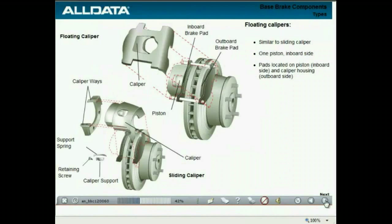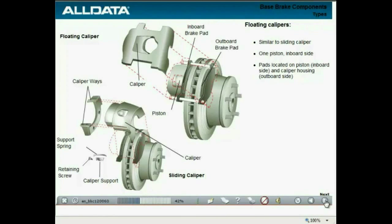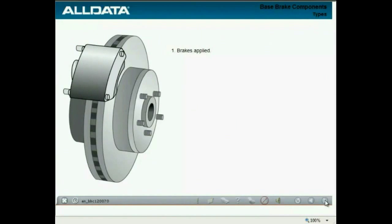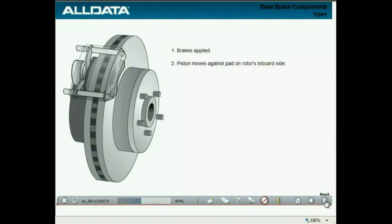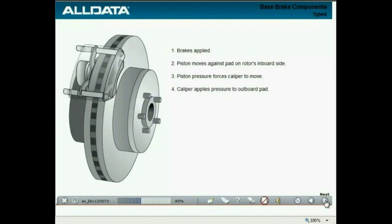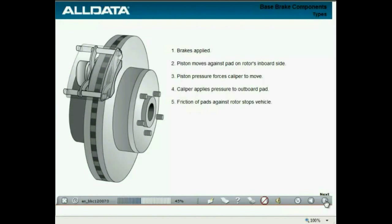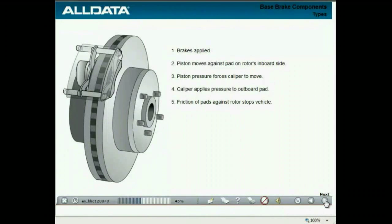Floating calipers and sliding calipers are very similar. Both generally use one piston located on the inboard side of the caliper. The brake pads are attached to the piston on the inboard side and the caliper housing on the outboard side. When the brakes are applied, hydraulic pressure forces the piston to move out against the pad, and the pad presses against the inboard rotor surface. Pressure applied to the piston forces the caliper to move on its slides toward the inboard side, increasing pressure on the outboard side. The caliper movement applies pressure against the outboard brake pad, forcing the pad against the rotor surface, and both brake pads press against the rotor surface, stopping the vehicle.